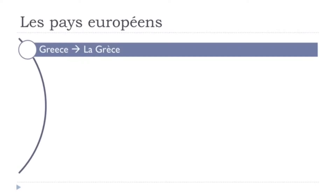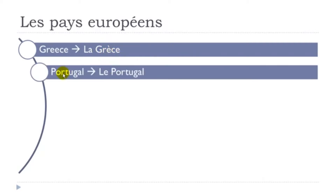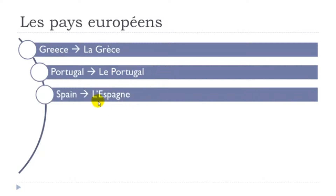The first one: la Grèce. Remember the E accent grave — it's open: Grèce. La Grèce. Le Portugal. L'Espagne. Don't insist on the final E because basically it's not pronounced. L'Espagne.